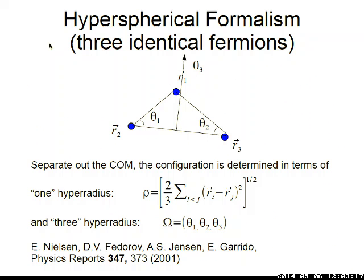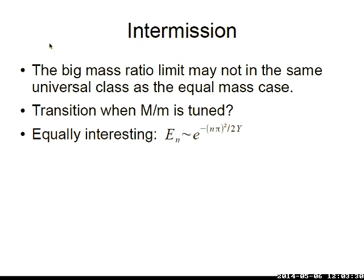Now let's move to the equal-mass case. I have three identical fermions, and I would like to treat them equally using hyperspherical formalism. In 2D, after separating out the center-of-mass motion, the configuration can be determined by the hyperradius rho, defined as the overall scale of how close the three particles are — if rho is very small, all three stay very close to each other. We also need three hyper-angles: two determine the shape of the triangle formed by the three particles, and one determines the orientation of this triangle in the two-dimensional plane. For a detailed review of hyperspherical formalism I refer to this paper, from which we learned this formalism.